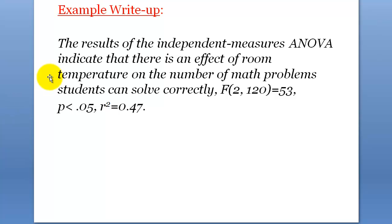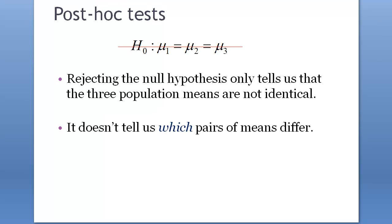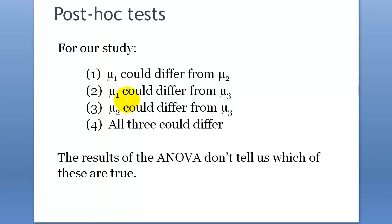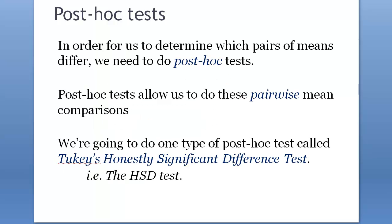Results of the independent measures ANOVA indicate there is an effect of room temperature on the number of math problems students can solve correctly: F with degrees of freedom (2, 120) equals 53, P less than 0.05, and effect size R-squared equals 0.47. Going back to my initial question — which pairs of means differ? There could be many possibilities, and we don't know which is the case. To determine which pairs of means differ, we need to do a post-hoc test.